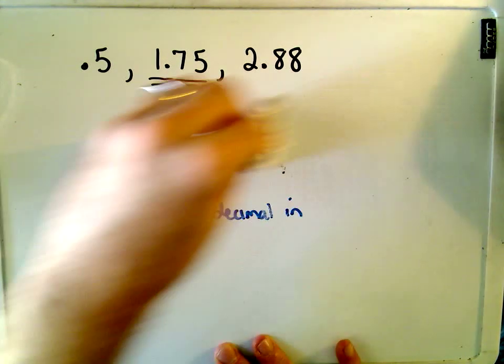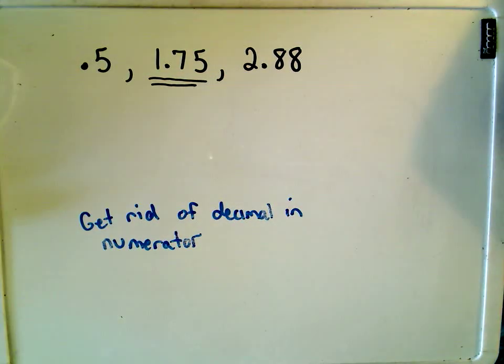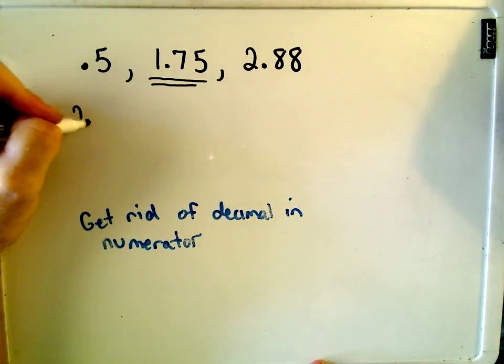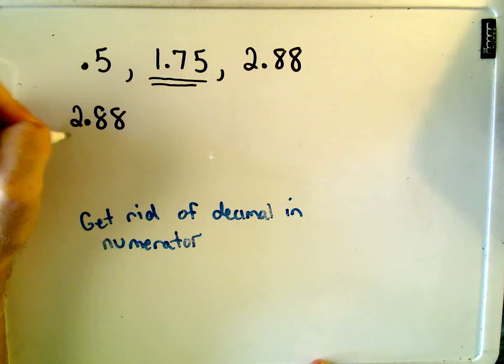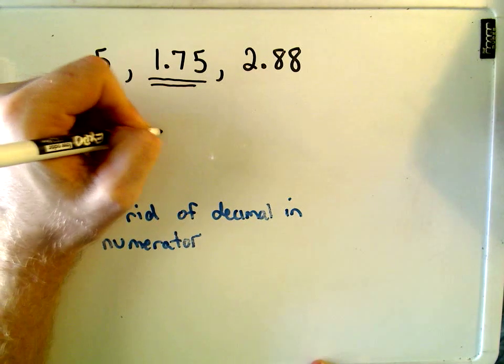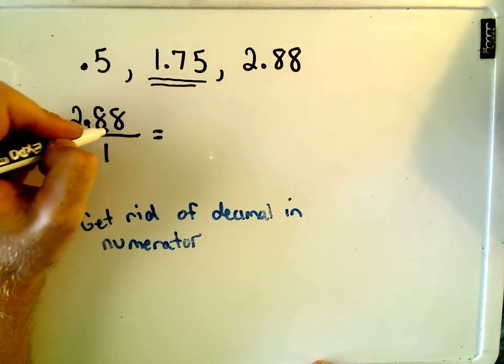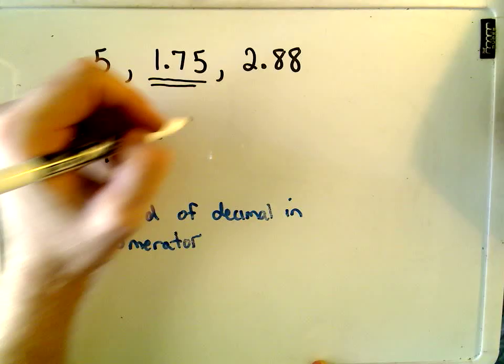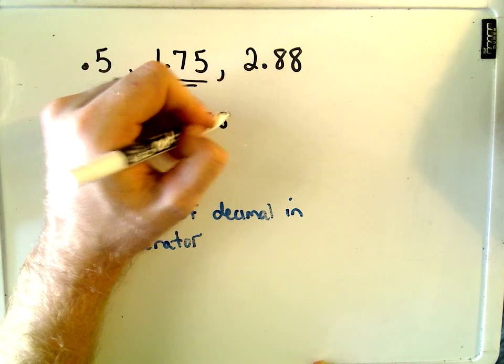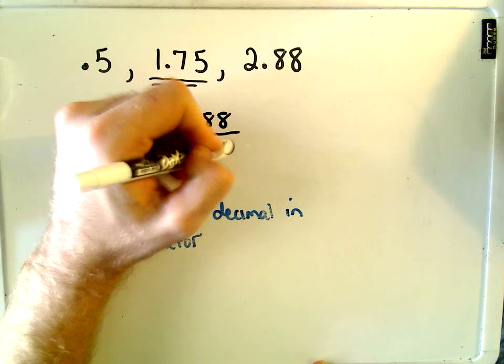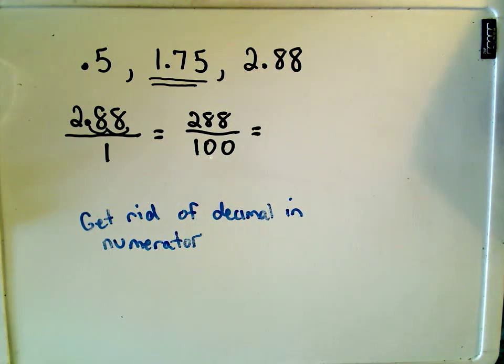One last one, 2.88. Same thing, I'm going to write this as over 1. If I move the decimal place to the right two times in the numerator, that means I'm going to have to add two zeros to the denominator. Now I have to start looking for common factors.